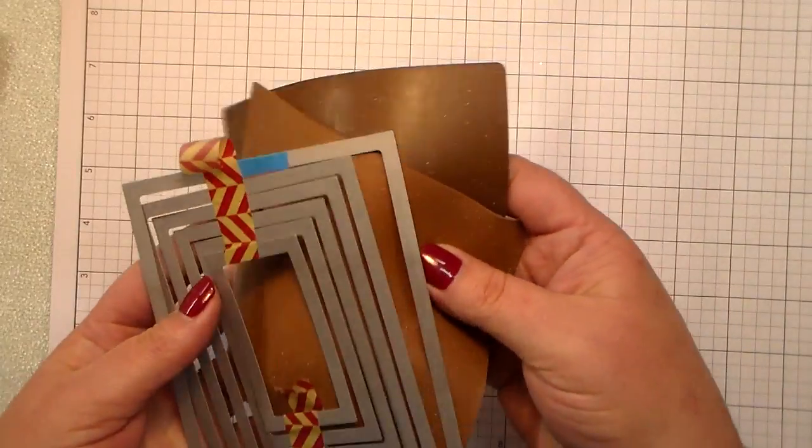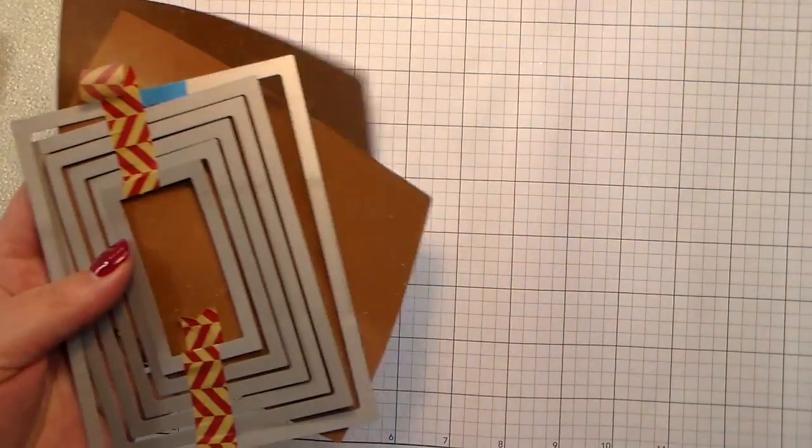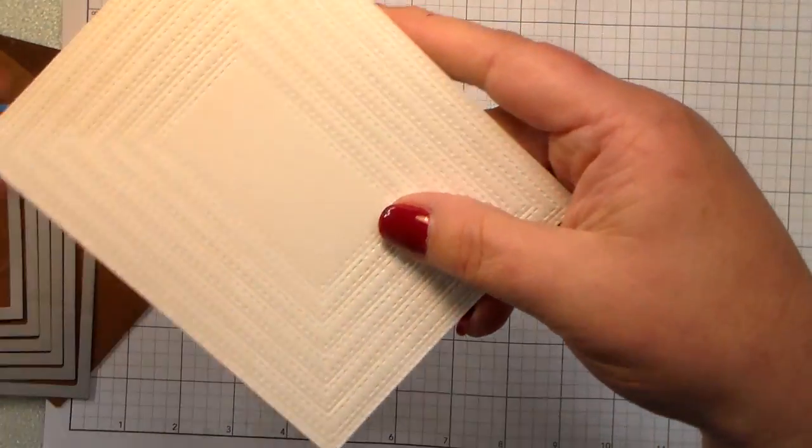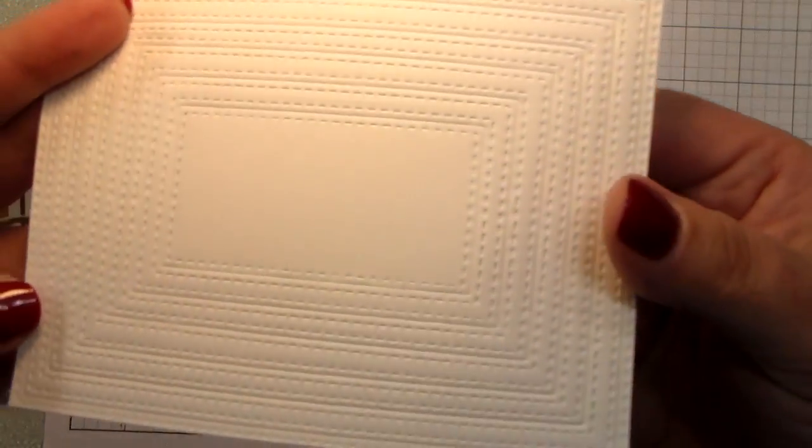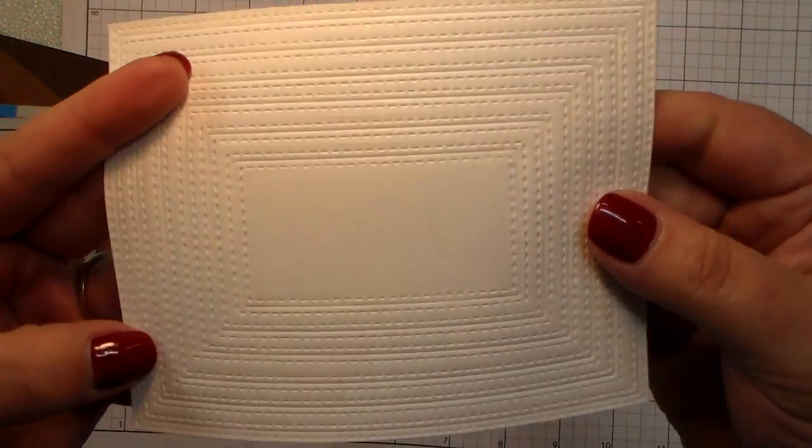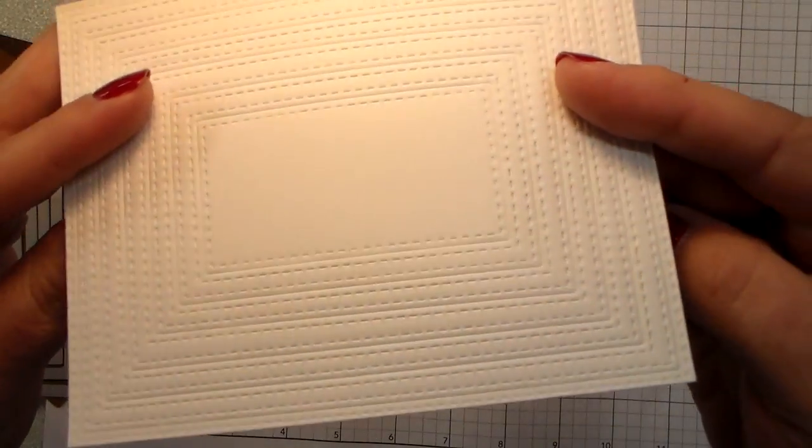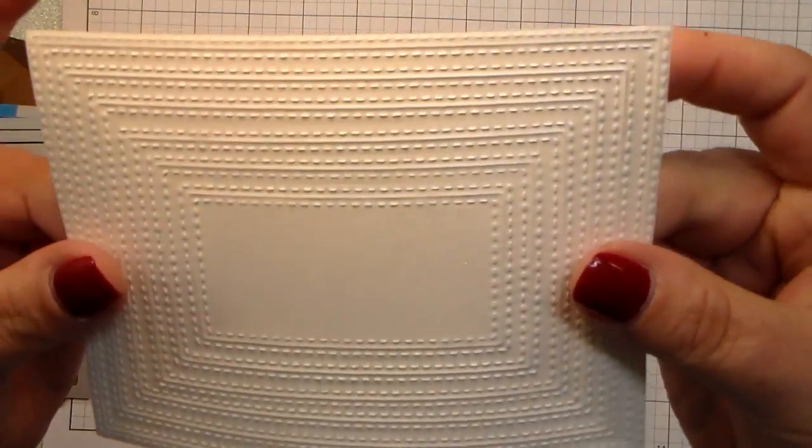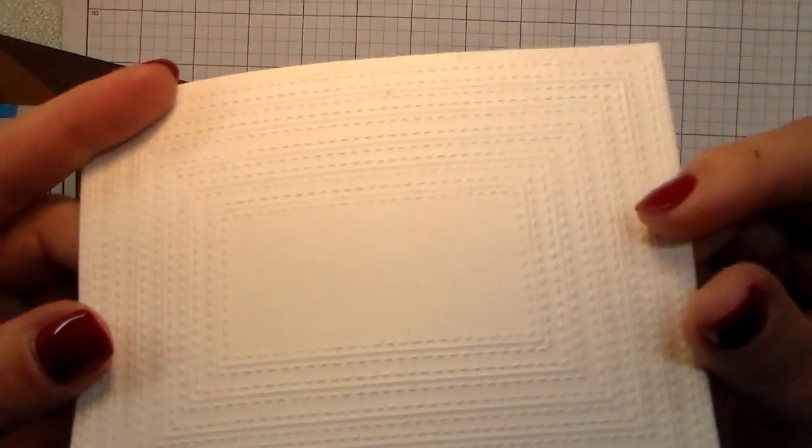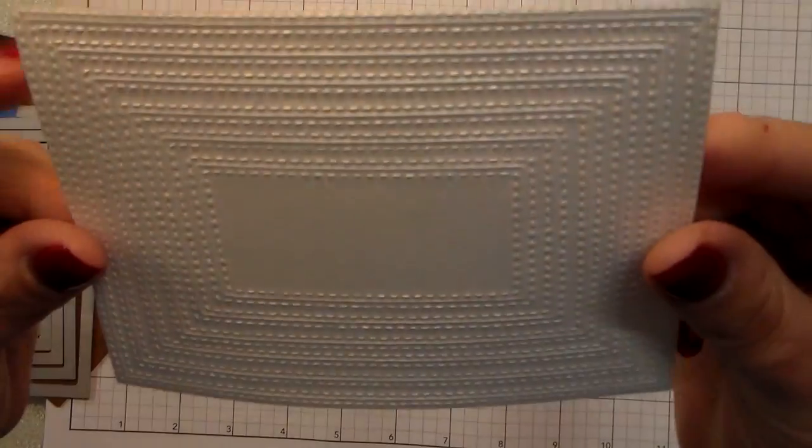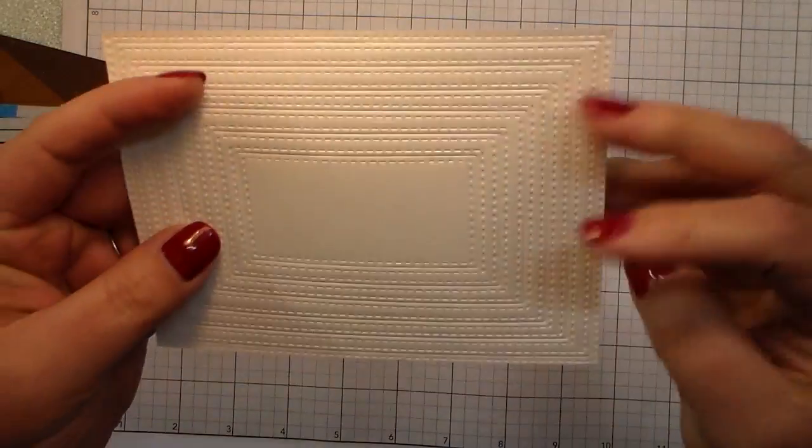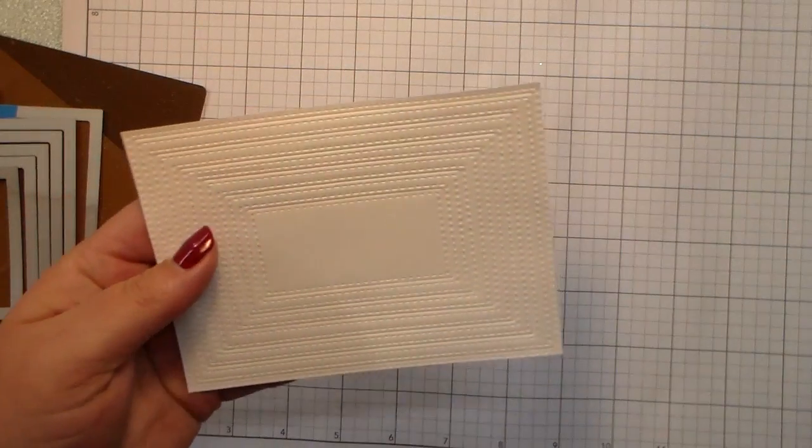I used my little rubber embossing mats and ran it through my die machine. Follow the directions on your die machine on how to emboss with your dies. As you can see there, it leaves the impression on your paper, but it doesn't have any cut lines. You're just left with this awesome texture.